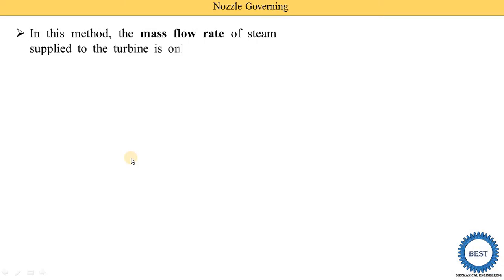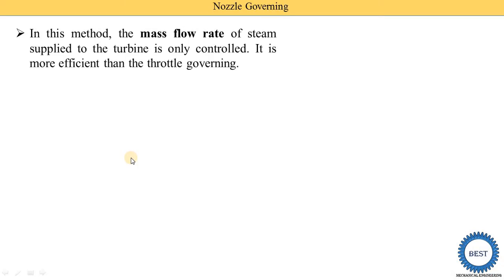In nozzle governing, only the mass flow rate of steam supplied to the turbine is controlled, and it is more efficient than throttle governing. In throttle governing we control two parameters — we throttle the pressure of steam as well as control the mass flow rate. But in nozzle governing we only control the mass flow rate, making it more efficient than throttle governing.